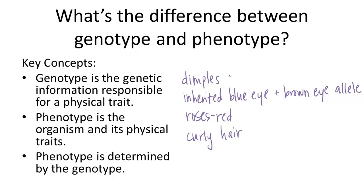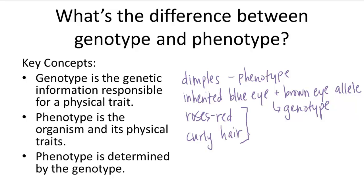Dimples describes a physical trait, so that must mean it's a phenotype. Inherited blue eyes and brown eye alleles — that is describing the genetic makeup, so this must be genotype. Roses are red and George has curly hair are both describing physical traits, so both of these are phenotypes. You can practice this yourself a little more and get really familiar with the difference between genotype and phenotype.